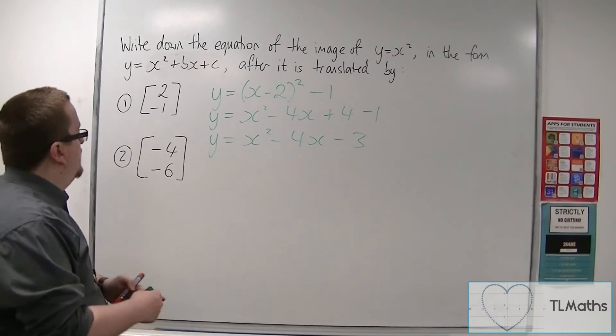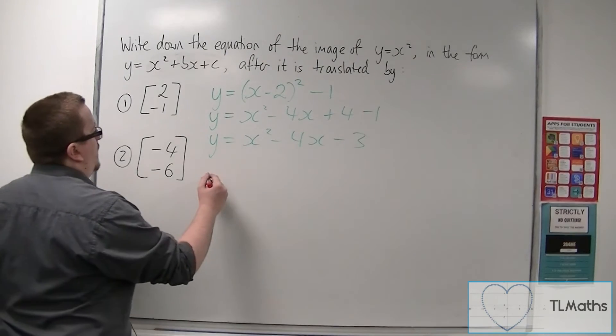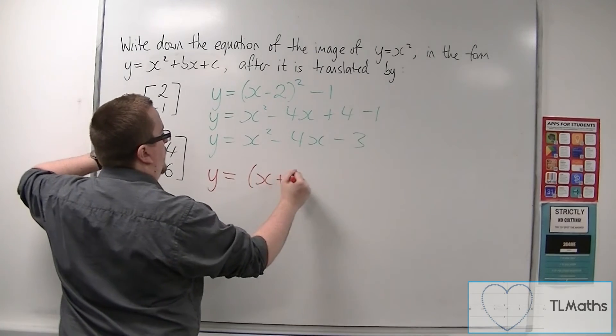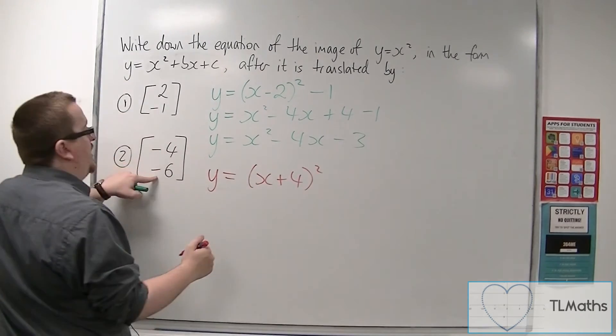If we look at the second one, then we're going to have y is equal to x plus 4 squared take away 6.